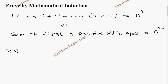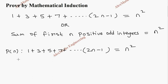P of n has two parts: on the left hand side we have 1 plus 3 plus 5 plus 7 plus dot dot dot 2n minus 1, and on the right hand side we have n squared. We are going to take P of 1.